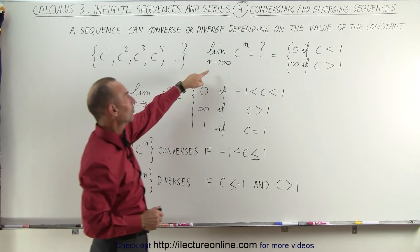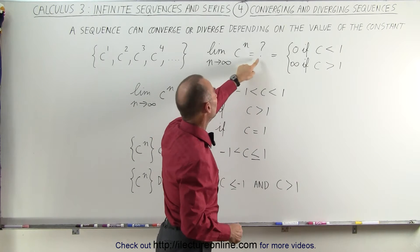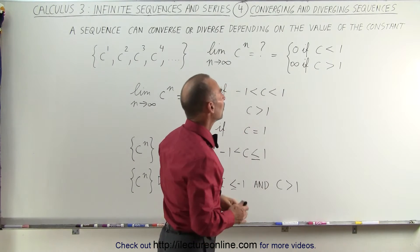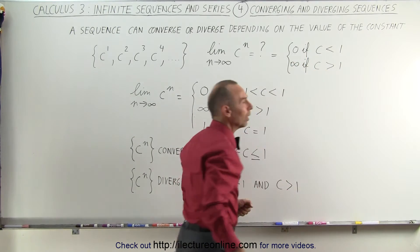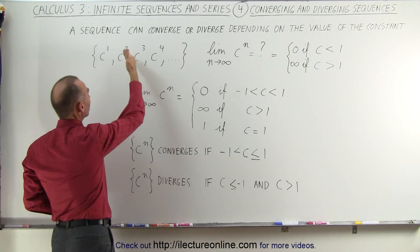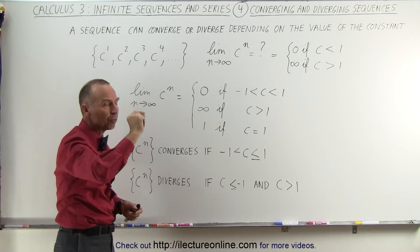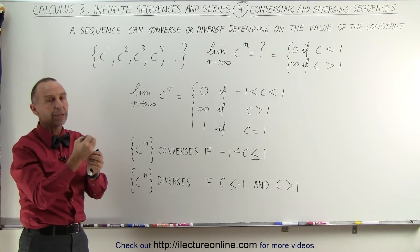So the limit of the sequence c to the n as n approaches infinity, what will it be equal to? Well we can see that it will be equal to 0 if c is a number less than 1. If the number is 0.5 for example, 0.5 raised to the first power, to the second power, to the third power becomes smaller and smaller, and in the limit as n goes to infinity that will become 0.